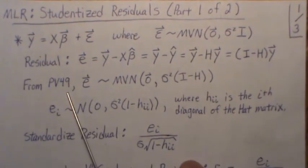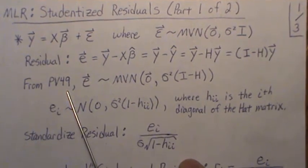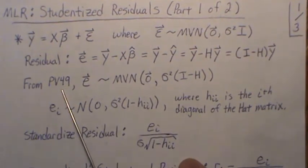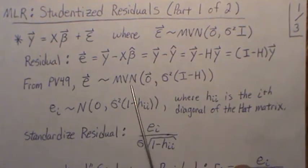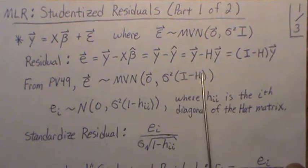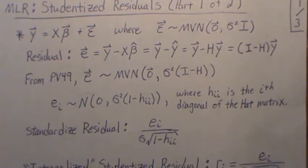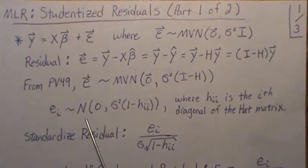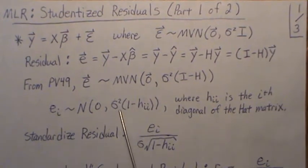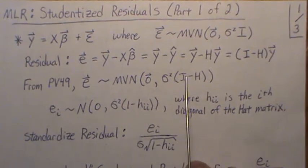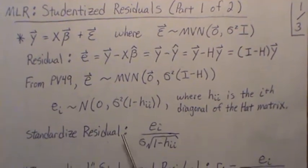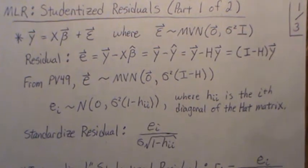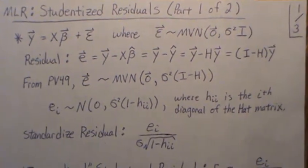From previous video 49 in this playlist on generalized linear models and regression, we showed that the residuals are multivariate normal with mean zero and covariance matrix σ²(I - H), where H is the hat matrix. So if we want just the ith residual, it's normal with mean zero and variance σ²(1 - h_ii), where h_ii is the ith diagonal element of the hat matrix.